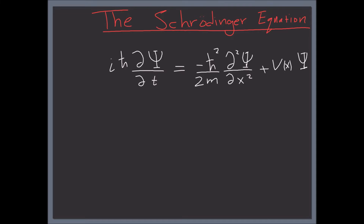Once we solve the time part, we are done with it once and for all. This is a partial differential equation, and the first weapon of attack is separation of variables. We're going to try to separate the variables inside the Ψ function. Remember, Ψ is a function of x and t. Separation of variables means we assume the solution to be Ψ(x,t) = ψ(x) times some function of t that we don't know.